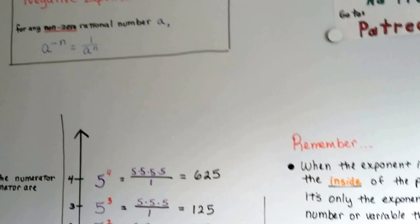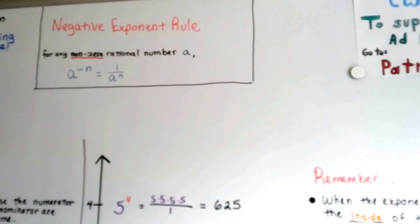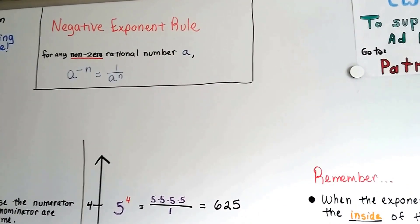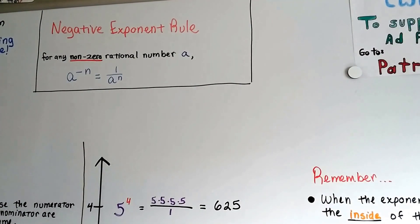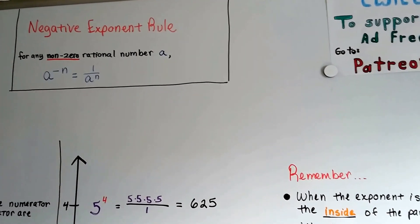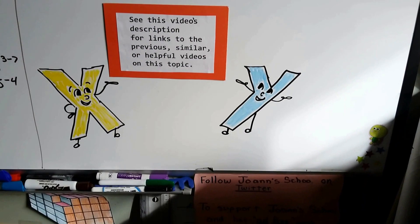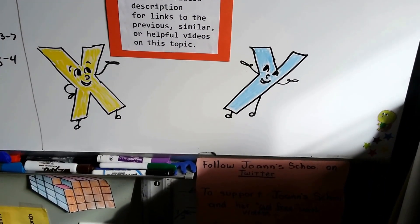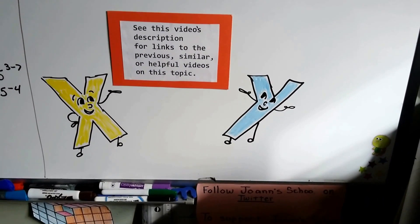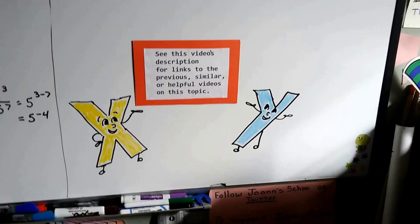So remember the zero exponent rule says for any non-zero rational number a, a to the negative n is going to equal a fraction 1 over a to that nth power. And you can see this video's description for links to the previous video, similar ones or helpful ones on this topic. And I'll have some 7th and 8th grade videos in there to help you.